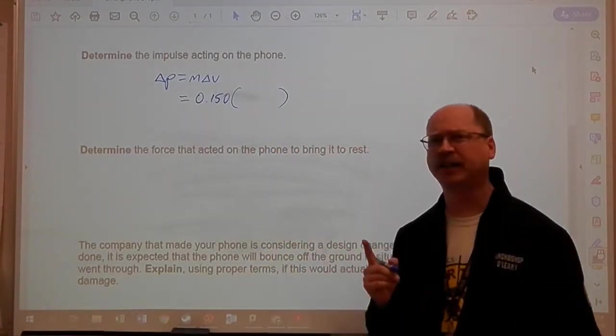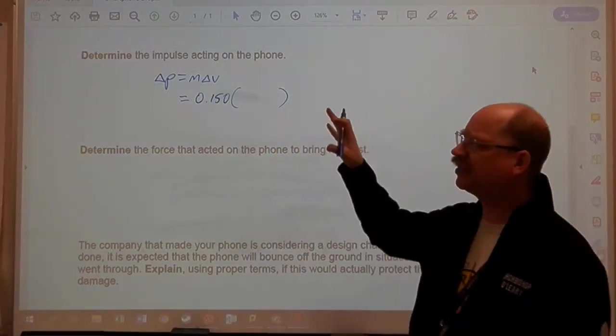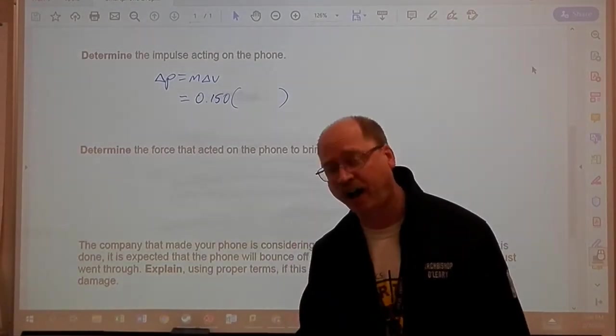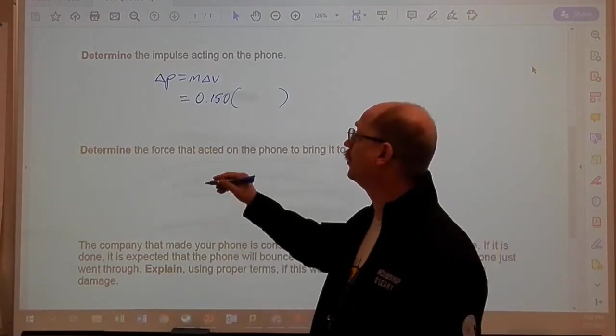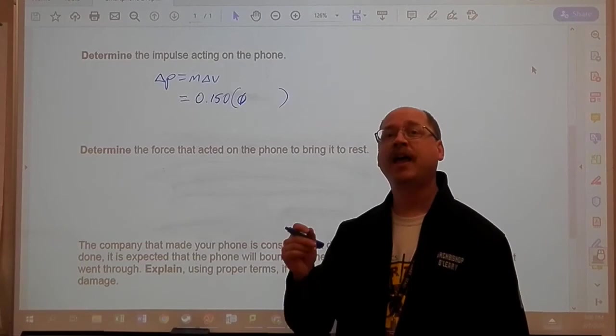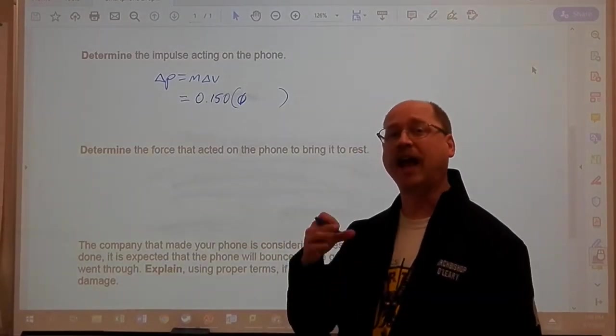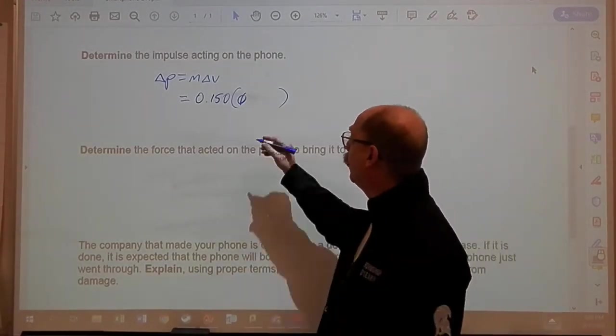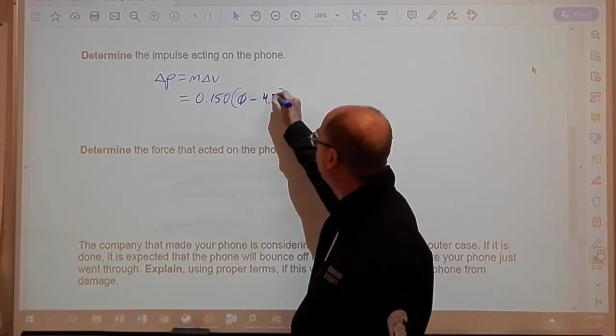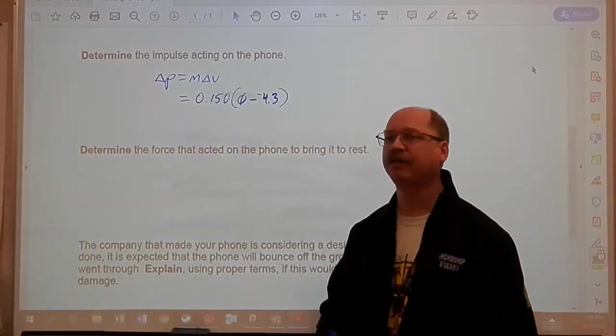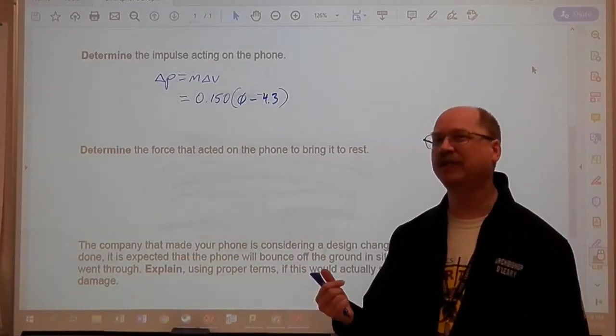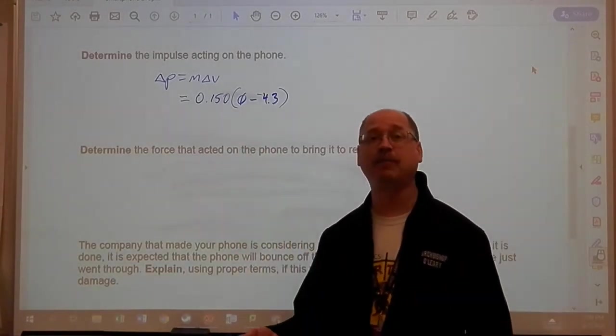Now, when we do the final minus initially, you've got to be careful because remember, this is the moment of impact with the ground. Its final velocity is going to be zero because when everything's done, we're going to see the phone sitting there motionless. But its initial velocity, initial at the moment of impact, was when it came falling down at that 4.3 meters per second. So we've got to be careful when we put that in. It's negative 4.3 because it's traveling downwards, and we're subtracting it. So the stuff inside the brackets is actually going to end up being positive.